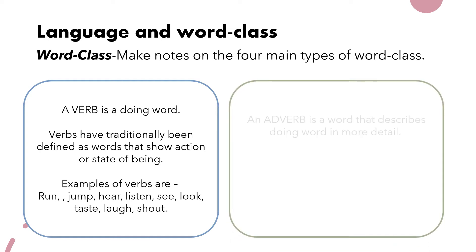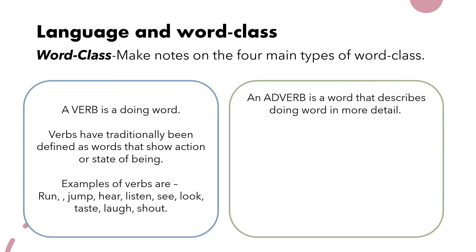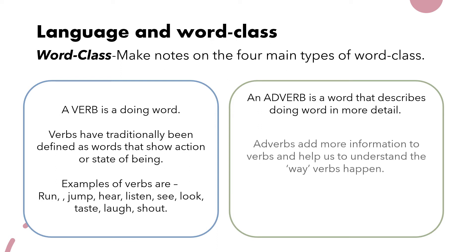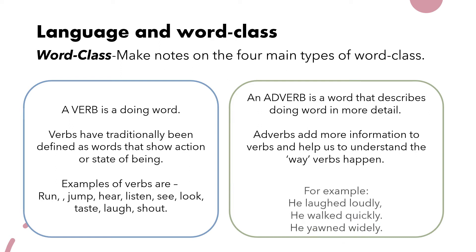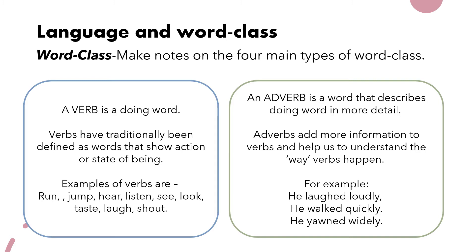Verbs are often coupled with another word class called adverbs. An adverb describes a doing word in more detail — specifically, it describes how a verb is carried out. Adverbs add more information to verbs and help us understand the way the verb actually happens. For example, 'he laughed loudly' — 'laughed' is the verb and 'loudly' is the adverb. This is normally indicated by a 'y' at the end. While not every word ending in 'y' is an adverb, most adverbs do end that way — for example, he walked quickly, and he yawned widely.